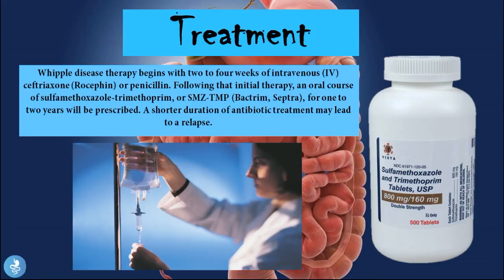Treatment: Whipple disease therapy begins with two to four weeks of IV ceftriaxone or penicillin. Following that initial therapy, an oral course of sulfamethoxazole-trimethoprim, or SMZ-TMP, for one to two years will be prescribed. A shorter duration of antibiotic treatment may lead to a relapse. As you can see from the treatment guidelines, once this bacteria infects the body and infiltrates many areas, the patient will need a very long course of antibiotic therapy. Even though it is curable, it is a long journey to the eradication of the bacteria.